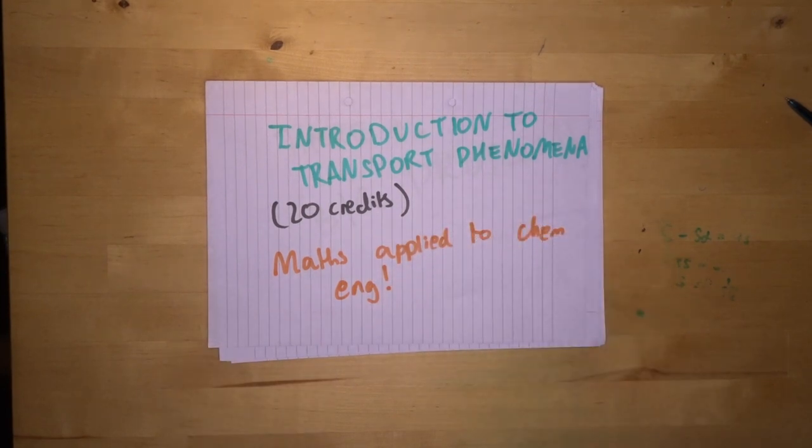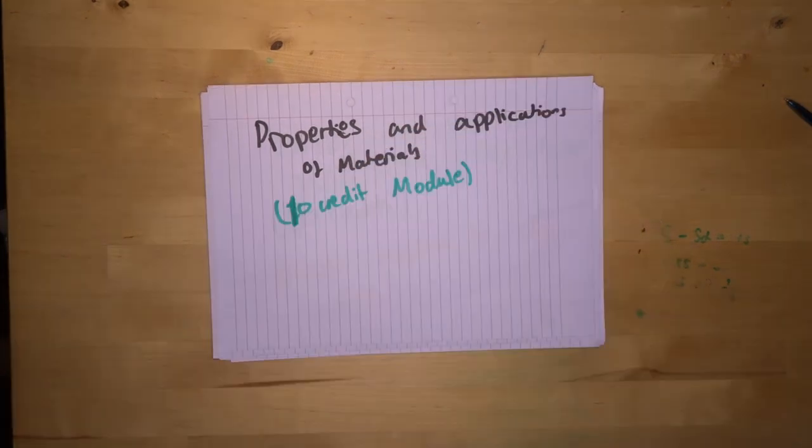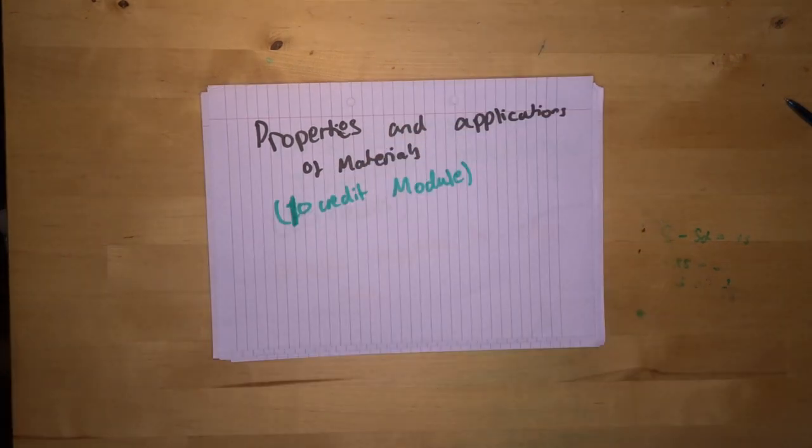You learn a lot of mechanics such as mass and heat transfer as well as the behaviour of fluids going through different types of pipe systems. This next module is called properties and applications of materials. It is a 10 credit module which revolves around learning the skills to choose suitable materials for different applications. So, for example, you would be given an application of a product and you would be required to choose a suitable material to make that out of.